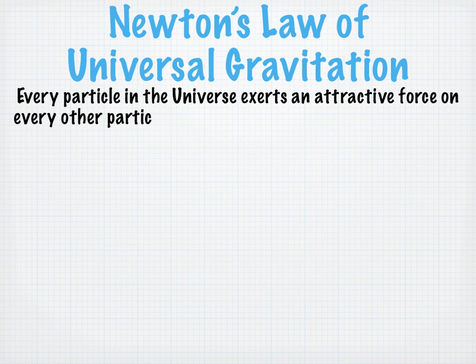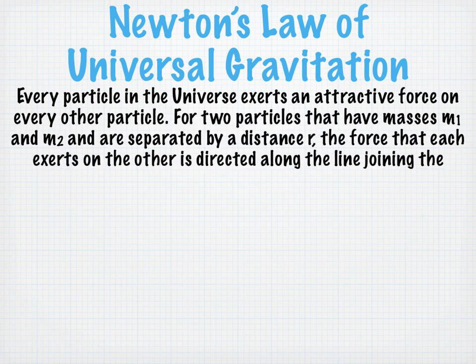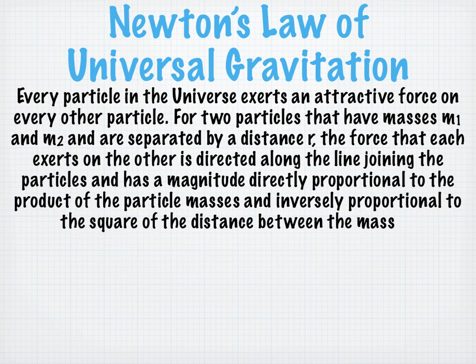Newton's law of universal gravitation says every particle in the universe exerts an attractive force on every other particle. For two particles that have masses m1 and m2, and are separated by a distance r, the force that each exerts on the other is directed along the line joining the particles, and has a magnitude directly proportional to the product of the particle masses, and inversely proportional to the square of the distance between the masses.